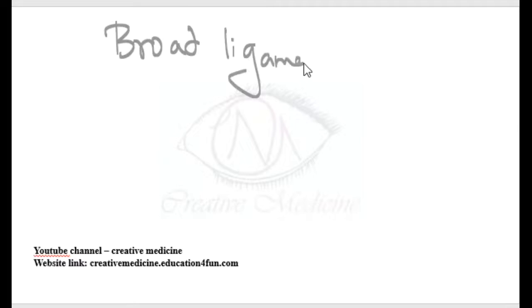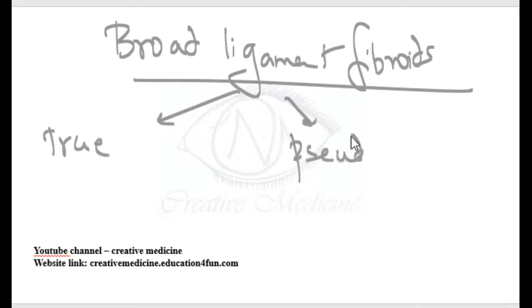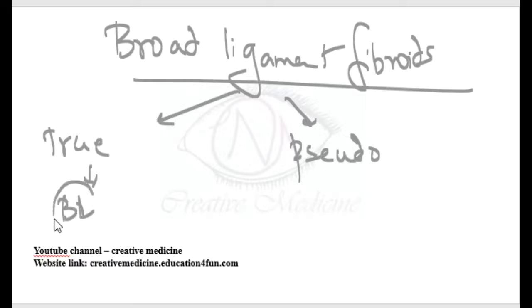Broad ligament fibroids can be of two types: true broad ligament fibroids or pseudo broad ligament fibroids. True broad ligament fibroid arises from the broad ligament, and the fibroid is present lateral to the ureter.